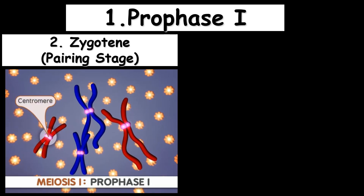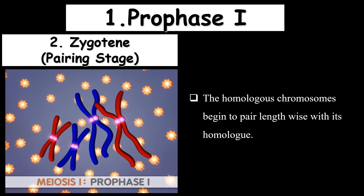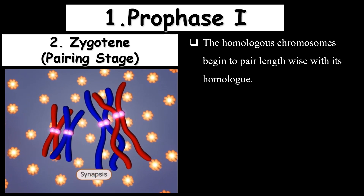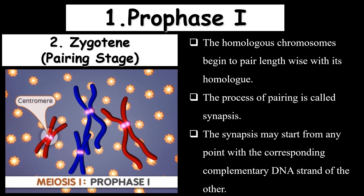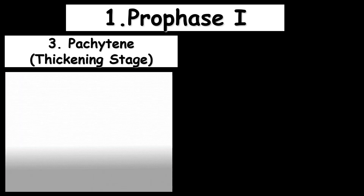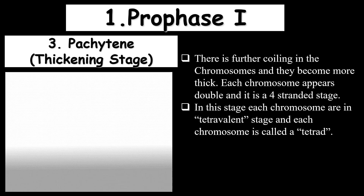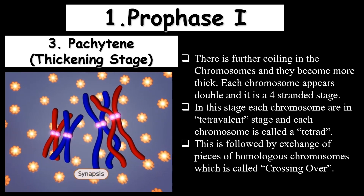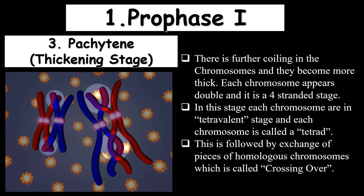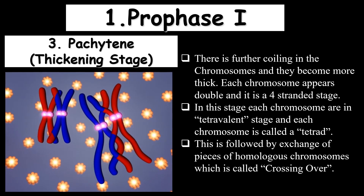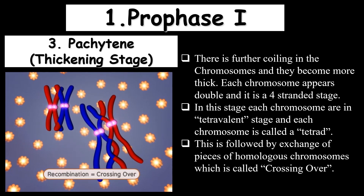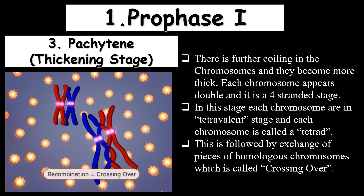In the next stage, Zygotene, the homologous pairs of chromosomes come close to each other and form a pair known as synapsis. This synapsis is formed through a synaptonemal complex, and they begin joining at various points along the chromosomes. The following stage is Pachytene, in which the chromosomes continue condensing and parts of the chromosomes get exchanged between the sister chromatids and their homologous pair.